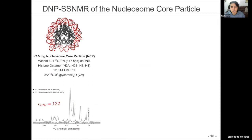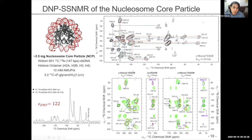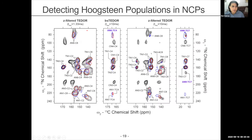Moving on to the nucleosome core particle, we see a similar enhancement of over 122. We can do the short Z-filter TEDOR mixing for assignments — this is a more crowded spectrum because we have G's and C's as well, not just a single AT label. But even with additional crowding, we can go through and assign each of the bases individually. We then repeat the band-selected TEDOR and Z-filter TEDOR to see if we can observe any Hoogstein populations in this sample.